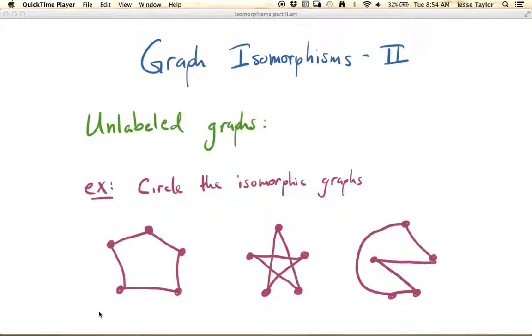And the first is that graphs are only going to be isomorphic if they have the same degree sequence. Okay, so it makes sense, right? Like, if one of the graphs has a vertex of degree 3 and one of the graphs doesn't have a vertex of degree 3, well then there's no way they're going to be isomorphic. So let's just go ahead and write the degree sequence for all of these.